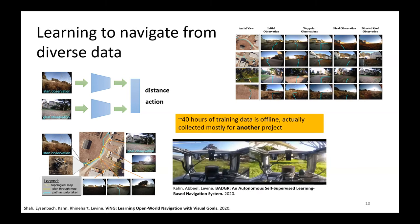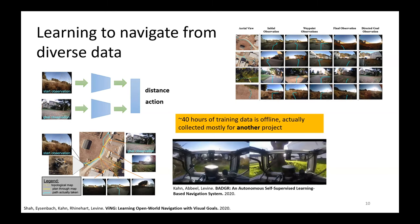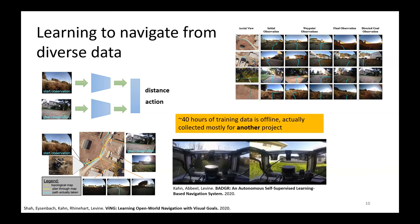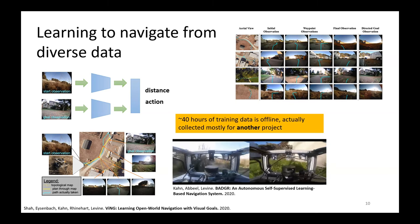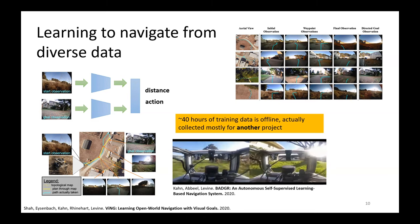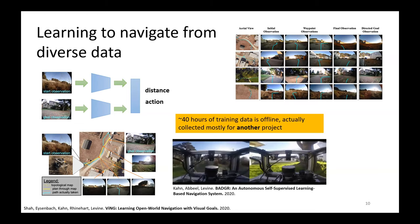One of the cool things about this project when we first did it is that we didn't collect any new data — we actually just used all the data that we had collected in our previous navigation research. We took everything, trained up this model, and it was able to navigate around some outdoor environments up in Richmond Field Station north of UC Berkeley. So that was pretty neat.